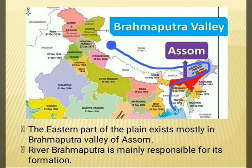The eastern part of the plain exists mostly in the Brahmaputra valley of Assam. River Brahmaputra is mainly responsible for its formation.